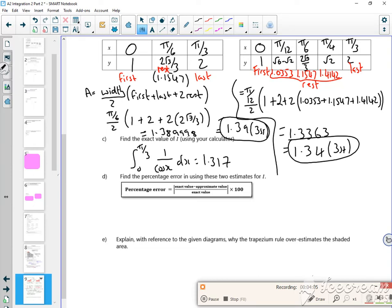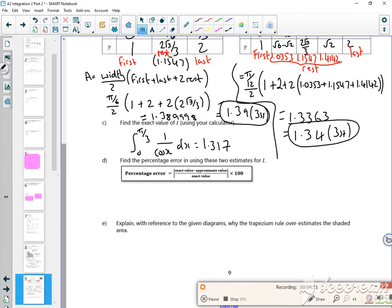Right, so it says work out the percentage error. You can do that as the difference between the numbers divided by what it should be. So like 1.38998 minus 1.317, all over 1.317 times by 100, and then 1.3363 minus 1.317 over 1.317 times 100.